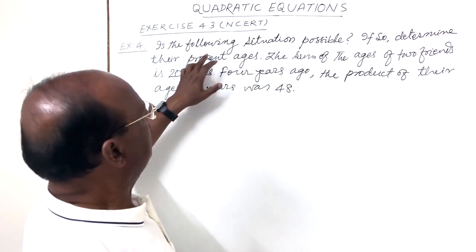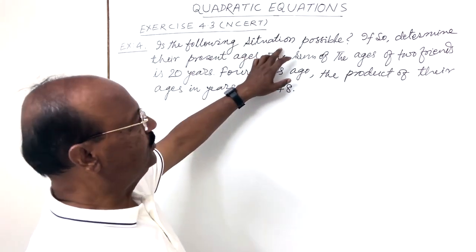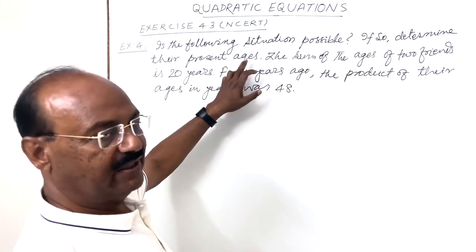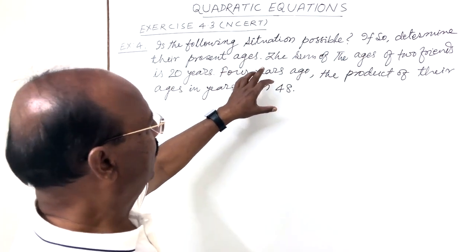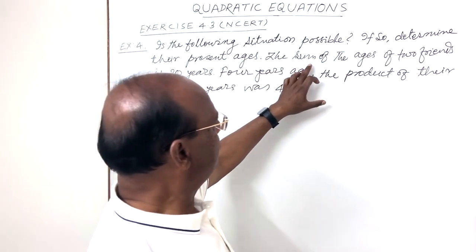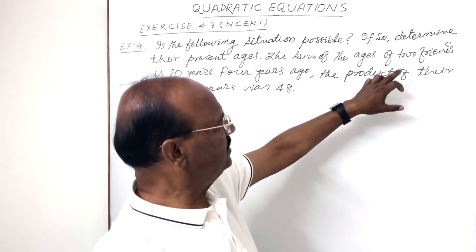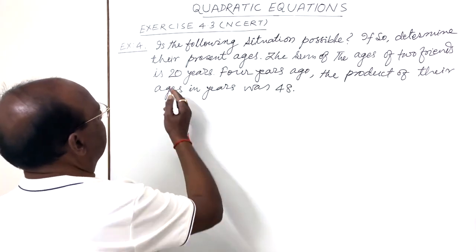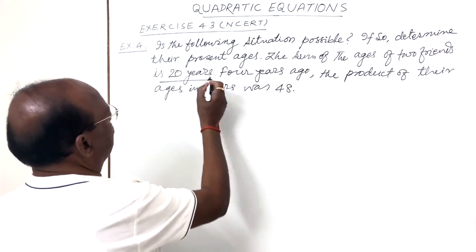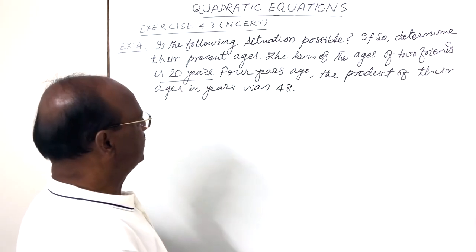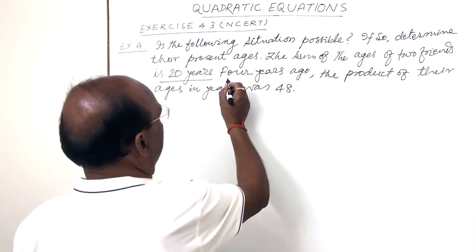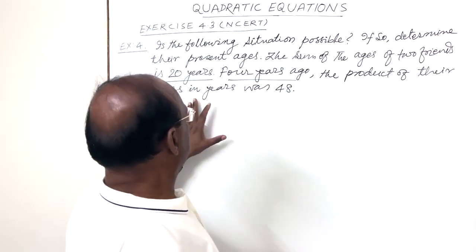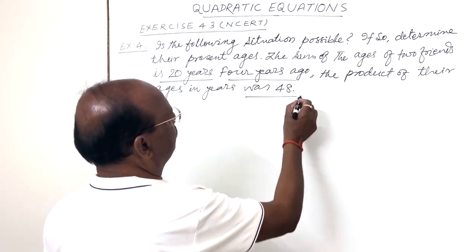The question is: is the following situation possible? If so, determine their ages. The sum of the ages of two friends is 20 years, and four years ago, the product of their ages in years was 48.